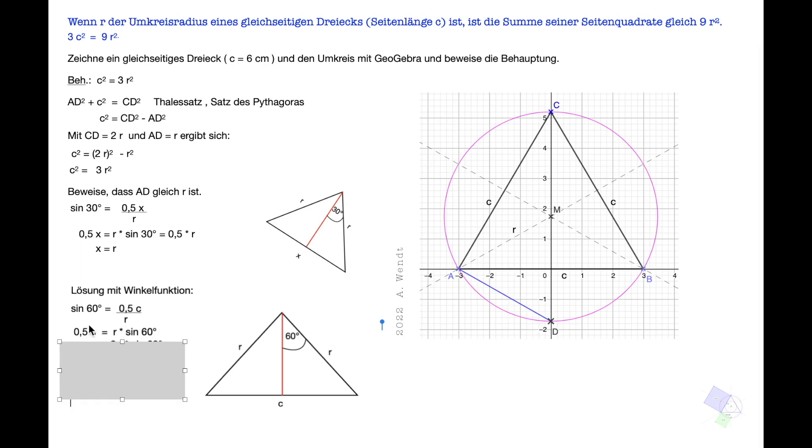Damit wir das nach C umstellen, müssen wir mit 2 multiplizieren. 2 mal 0,5 ist 1, also C gleich 2R mal Sinus 60 Grad. Jetzt interessiert uns C Quadrat, also quadrieren wir. Dann haben wir linke Seite C Quadrat, rechte Seite 2 mal R in Klammern zum Quadrat mal in Klammern Sinus 60 Grad hoch 2.